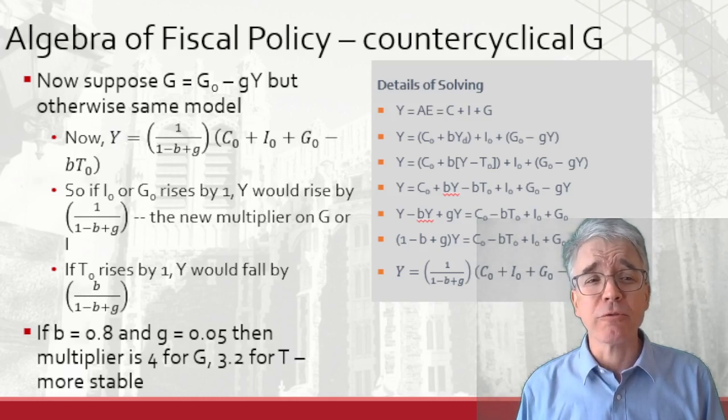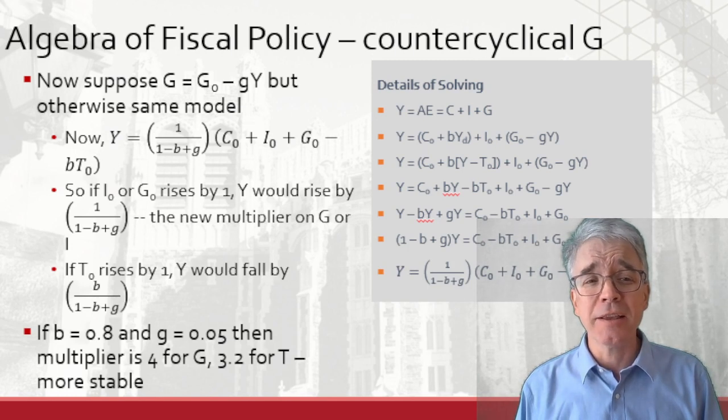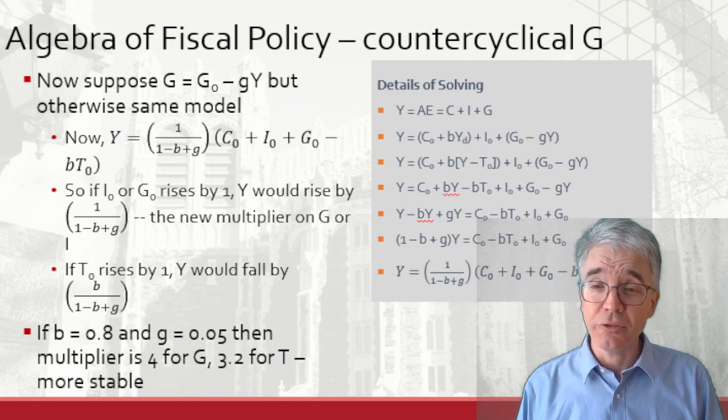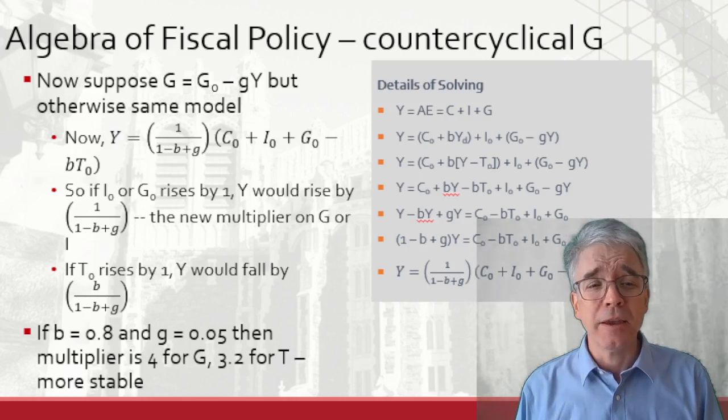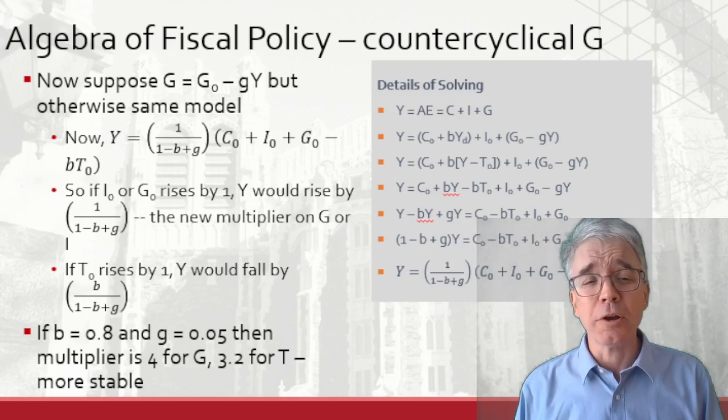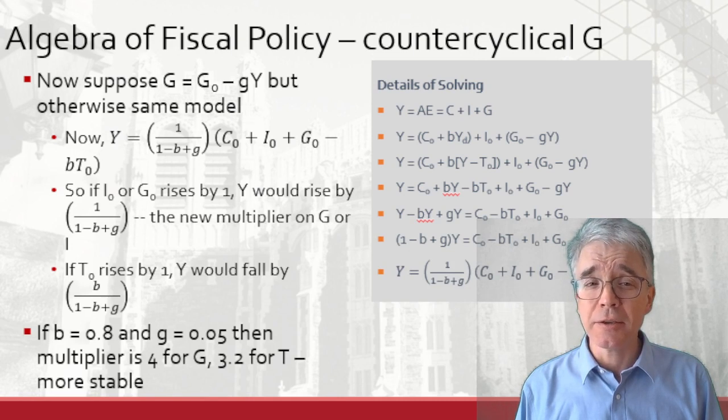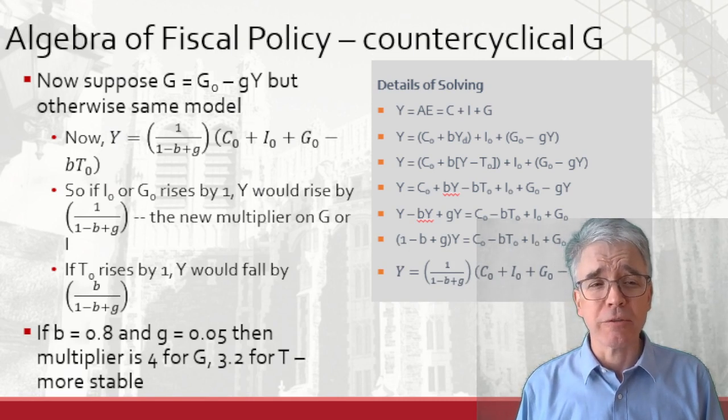Now we collect terms involving Y on the left-hand side. That little g Y term comes over, changes sign as it crosses the equal sign. Make sure to remember. Then we divide through. Now solve Y equals 1 over 1 minus B plus G times all our terms involving the naught.